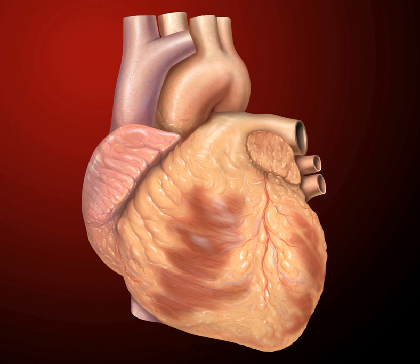The heart pumps blood with a rhythm determined by a group of pacemaking cells in the sinoatrial node. These generate a current that causes contraction of the heart, traveling through the atrioventricular node and along the conduction system of the heart.